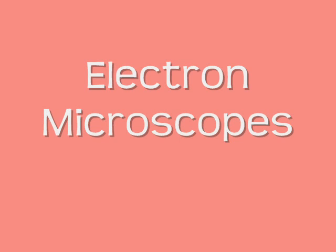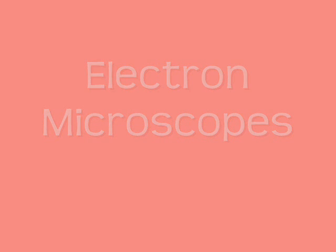Electron microscopes use electrons instead of light to form an image. They have a higher resolution than light microscopes, so they give more detailed images. There are two kinds of electron microscope.